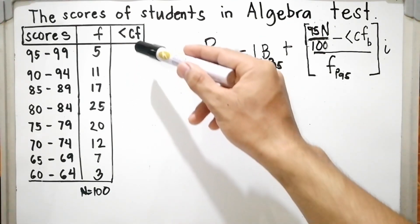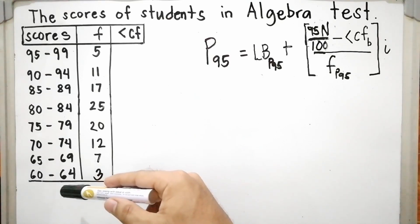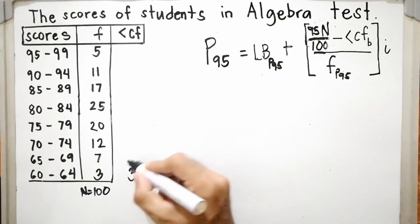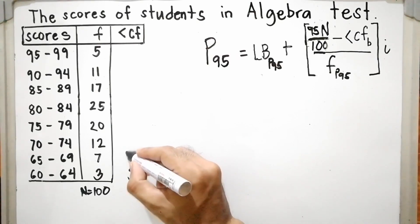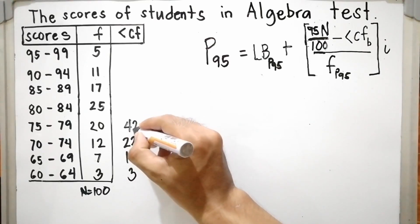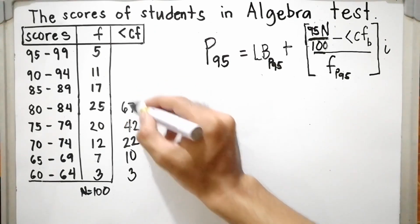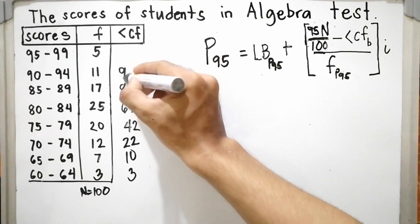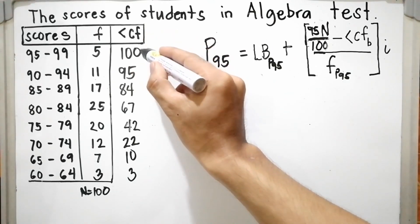When we say less than cumulative frequency, it is the sum of the frequencies starting at the lower class. The lower class is 60 to 64, so the frequency is 3 — rewrite 3. Then add up all the frequencies one by one: 3 plus 7 is 10, plus 12 is 22, plus 20 is 42, plus 25 is 67, plus 17 is 84, plus 11 is 95, plus 5 is 100. The last value must equal N.